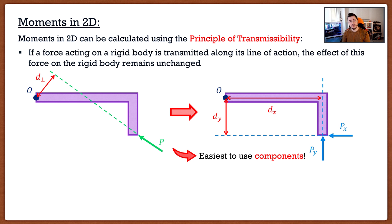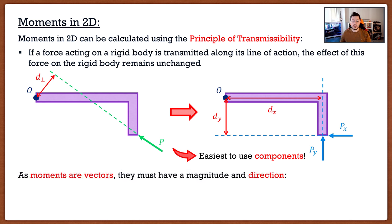Moments are simple — just take your force and multiply it by a perpendicular distance. But there's one last thing to keep in mind: moments are vectors, just like forces. And vectors have two things — first is the magnitude, which is the force times the distance, but they also have a direction.